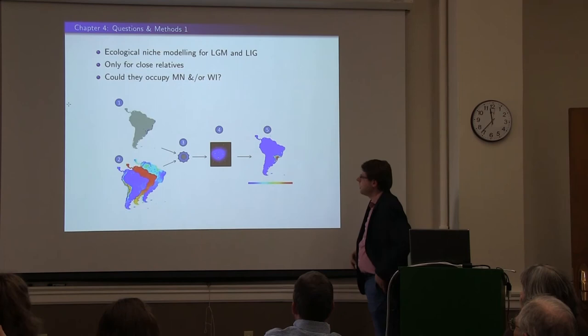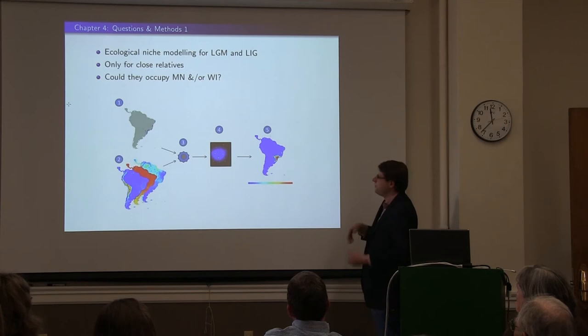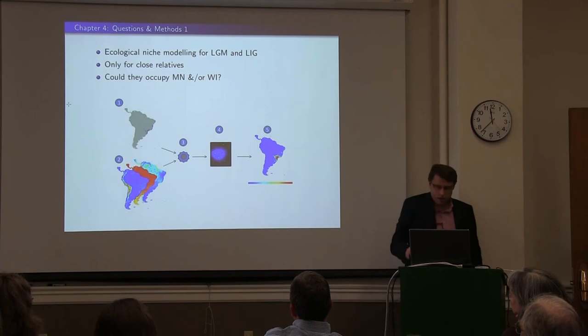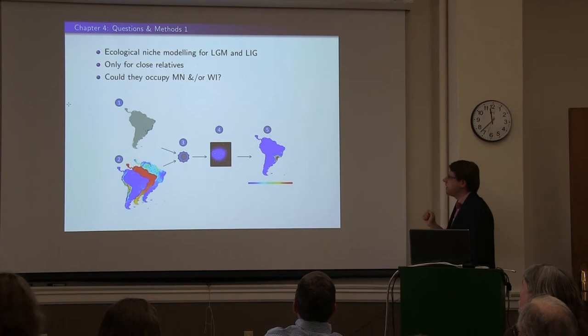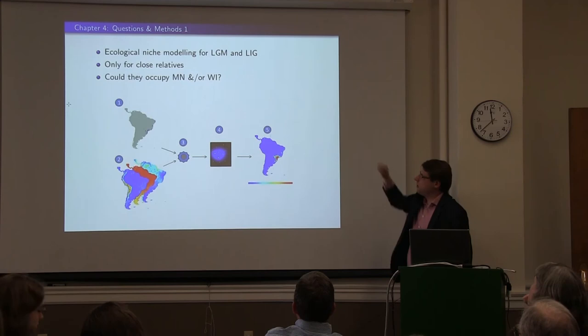We also had some ecological niche modeling, which you should be familiar with from Ali's talk. She was projecting into the future; I'm projecting into the past. So you take distribution points, take ecological variables, create a distribution model from that, and then project the probability of occurrence based on a different climatic layer. We only had two or three grid cells for lacustre, so the species distribution model won't be that accurate — so we did this with a close relative to ask whether they could have occupied Minnesota or Wisconsin during the last glacial maximum, about 20,000 years ago, or the last interglacial period, about 130,000 years ago.